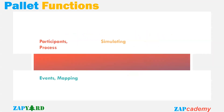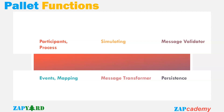Next in our course will be palette functions. We will learn about participants, process, events, mapping, and simulating the working of palette functions. We will also cover message transformers, message validator, persistence, and again simulating the working of palette functions.